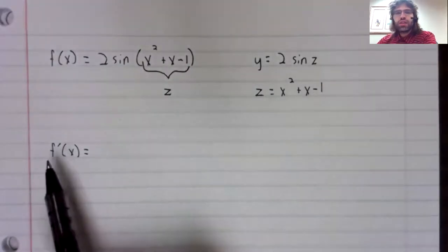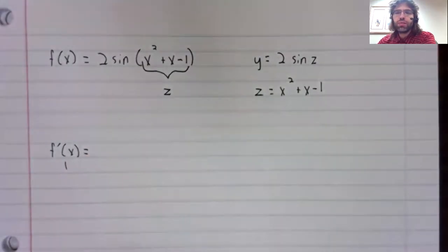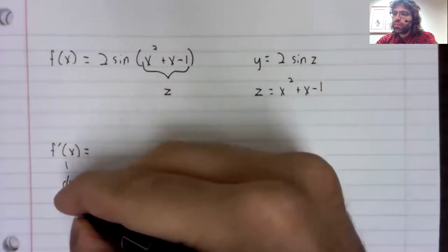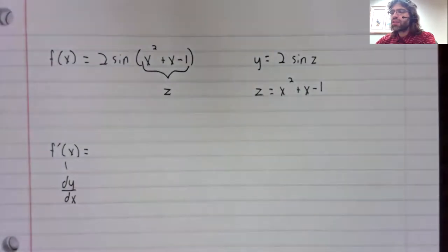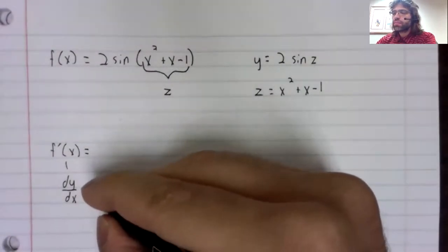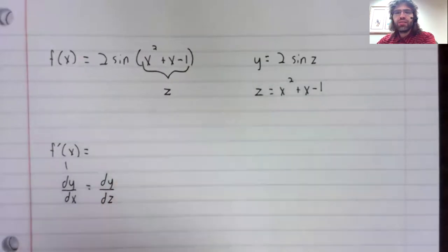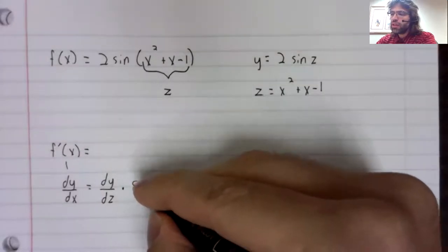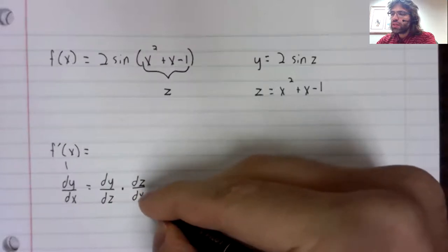This derivative that we're looking for using Leibniz notation is dy/dx. And the chain rule says that's dy/dz times dz/dx.